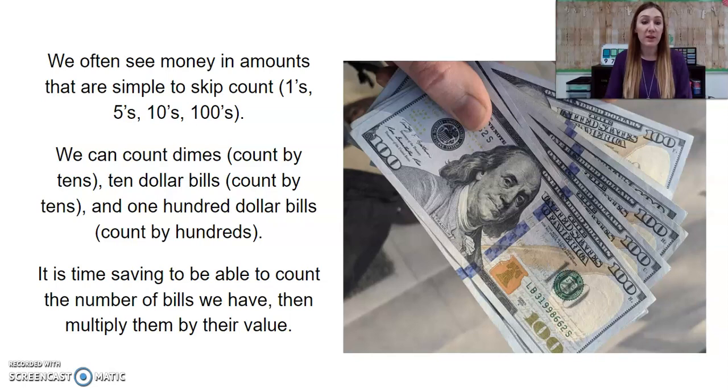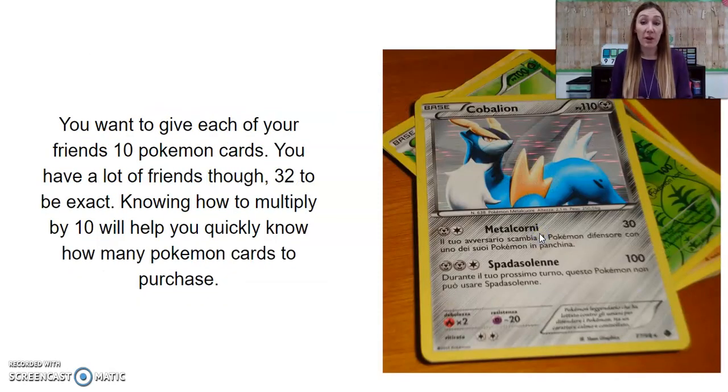It is time saving to be able to count the number of bills we have, then multiply that by their value. Another example would be you want to give each of your friends 10 Pokemon cards, but you have a lot of friends, 32 to be exact. Knowing how to multiply by 10 will help you quickly know how many Pokemons you need to purchase.